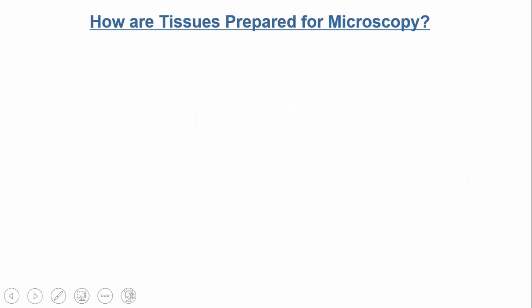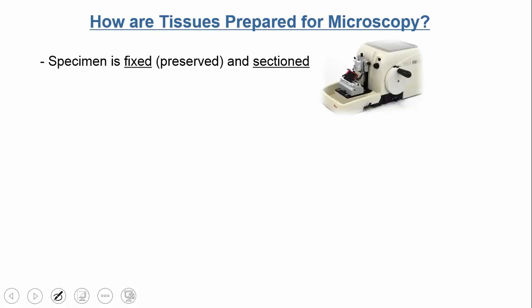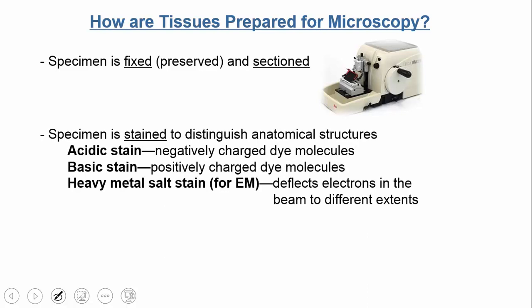So how are tissues prepared for microscopy? The first thing is that the specimen is fixed and then sectioned. By fixed, we mean the sample is killed — either with heat or with a chemical called formaldehyde or methanol. Then you section it, cutting it into thin strips using an instrument called the microtome. After that, the sample has to be stained. There are acidic stains and basic stains, but really what you're doing is accentuating structures — making sure you can tell the difference between different anatomical structures that might otherwise be hard to see.